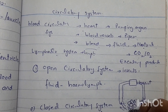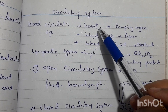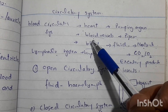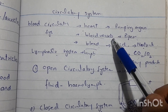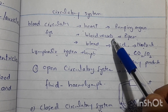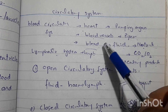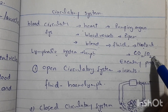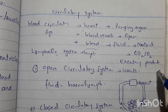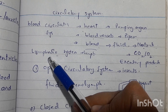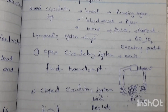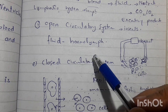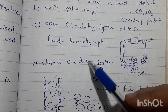The blood circulatory system has some components: the heart, which is a powerful pumping organ made of muscle; the blood vessels, which are of three different types — arteries, veins, and capillaries — which are pipes that carry blood. In the blood circulatory system, we discuss two types: one is the open circulatory system and the other is the closed circulatory system.